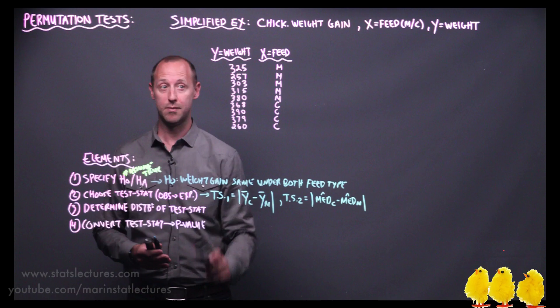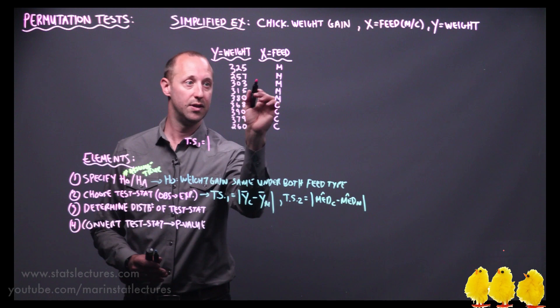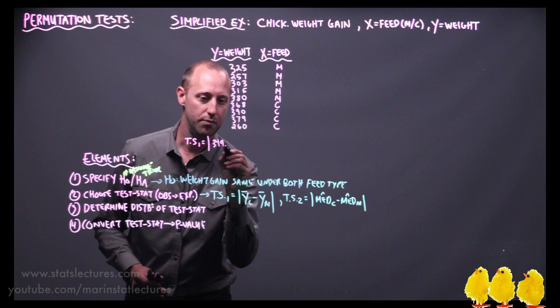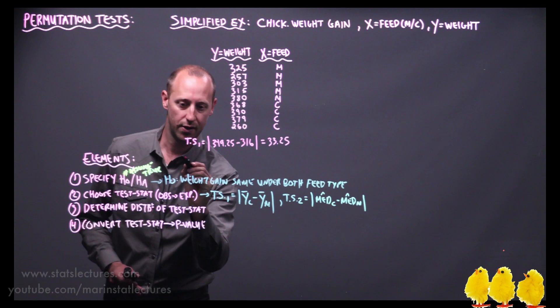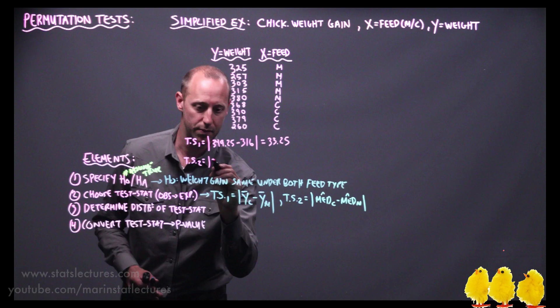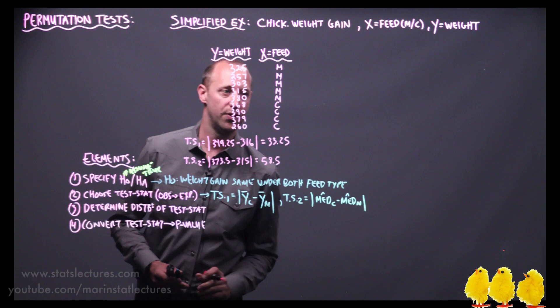Working this out for our observed data, test statistic one — the absolute difference in means — gives a mean for casein of 349.25 and a mean for meat meal of 316, for an absolute difference of 33.25. Test statistic two — the absolute difference in medians — gives a median for casein of 373.5 and a median for meat meal of 315, for an absolute difference of 58.5.